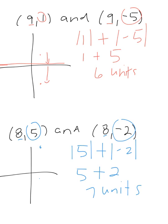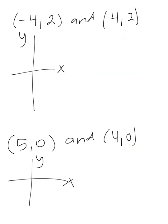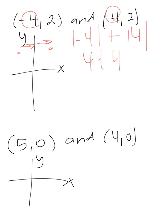We'll do a couple more examples. If you notice the y-values are the same, so you're looking at the x's. We have (-4,2) here and (4,2) over here, so you're looking for the horizontal difference. The absolute value of negative 4 plus the absolute value of 4 gives you 4 plus 4, which is 8 units. Remember, we are crossing over an axis, so we have to do addition.